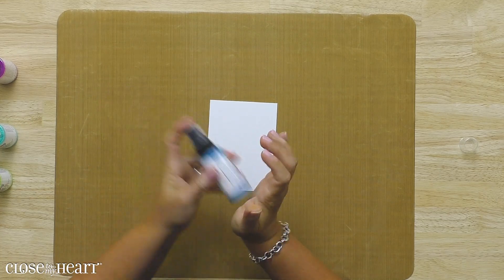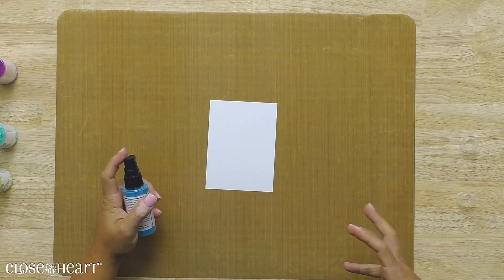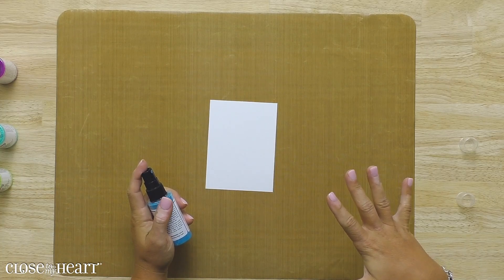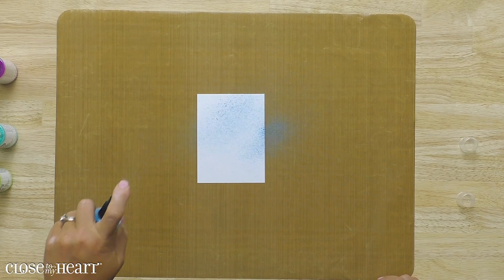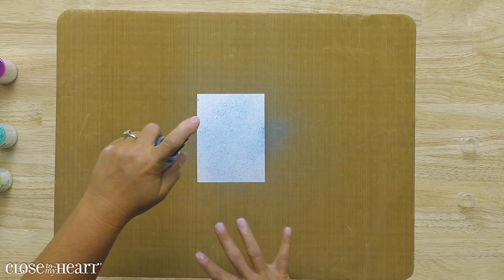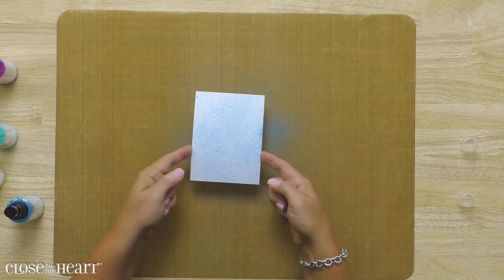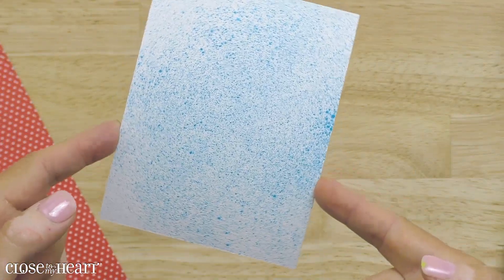So I'm going to start with Ocean. This is a really pretty darker turquoise and the key to this is working with your darkest colors first and then build it up. So I'm going to start with Ocean and I'm just spraying. Again, I'm about six inches above my project and I'm giving a really light mist. I'm going to show you each layer as we go so you can see what we're trying to achieve here. So there's my Ocean sprays.